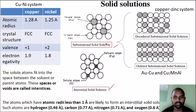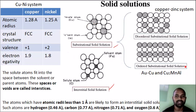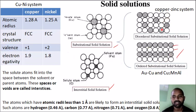In a substitutional solid solution, atoms are substituted in the lattice sites. For example, copper atoms are replaced by nickel atoms in the lattice. That is substitutional. There are two sub-types: ordered substitutional solid solution, where atoms are arranged in an orderly pattern, and disordered substitutional solid solution, where there is random arrangement with no regular substitution pattern.